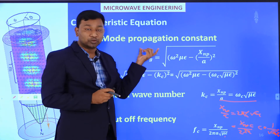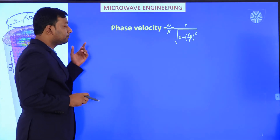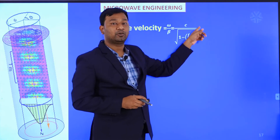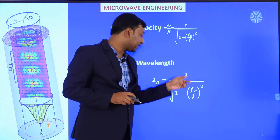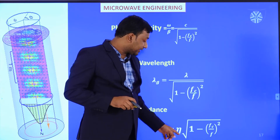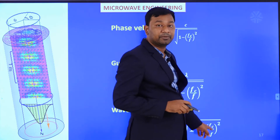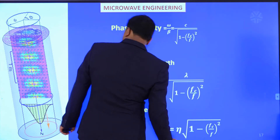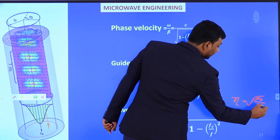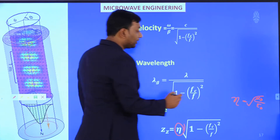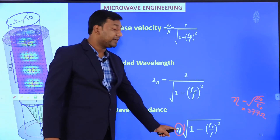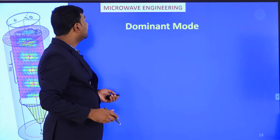The phase velocity is omega/beta equal to c divided by root(1 minus (fc/f)²). The guided wavelength is lambda-g equal to lambda divided by root(1 minus (fc/f)²). The wave impedance is Z-g equal to the intrinsic impedance of the medium divided by root(1 minus (fc/f)²). For air medium, the intrinsic impedance is eta equal to root(mu-naught/epsilon-naught), which equals 377 ohms.